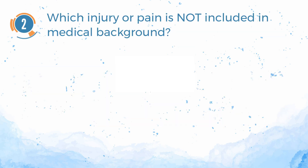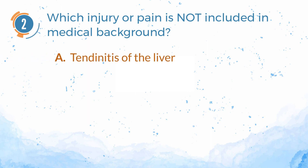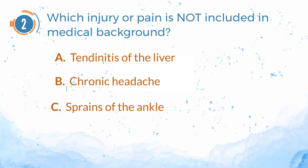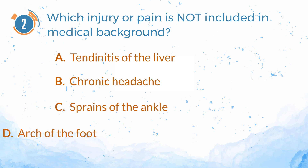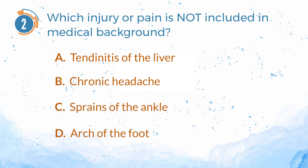Number 2. Which injury or pain is not included in medical background? A. Tendinitis of the liver. B. Chronic headache. C. Sprains of the ankle. D. Arch of the foot. The answer is A. Tendinitis of the liver.